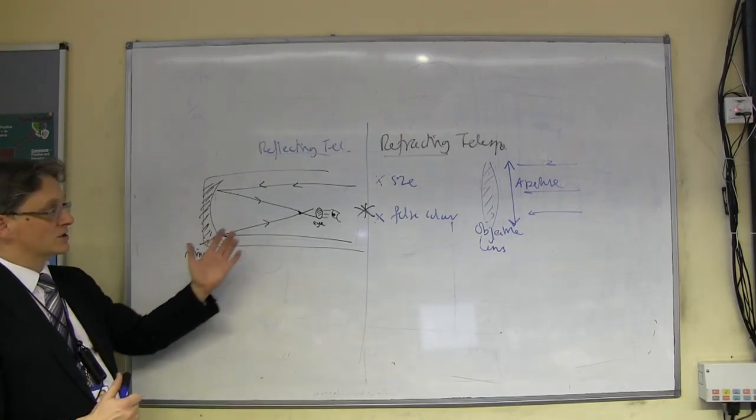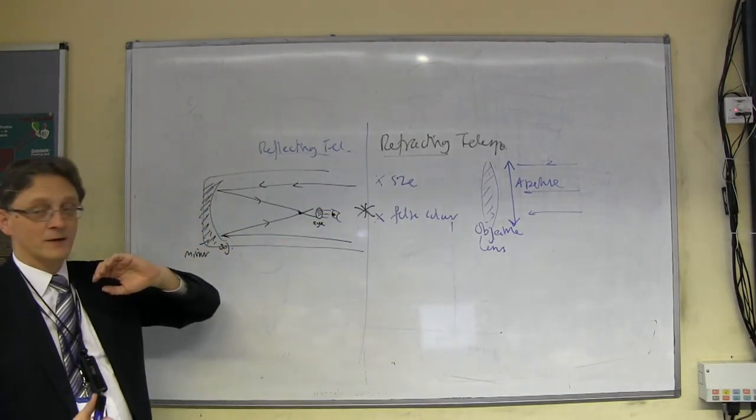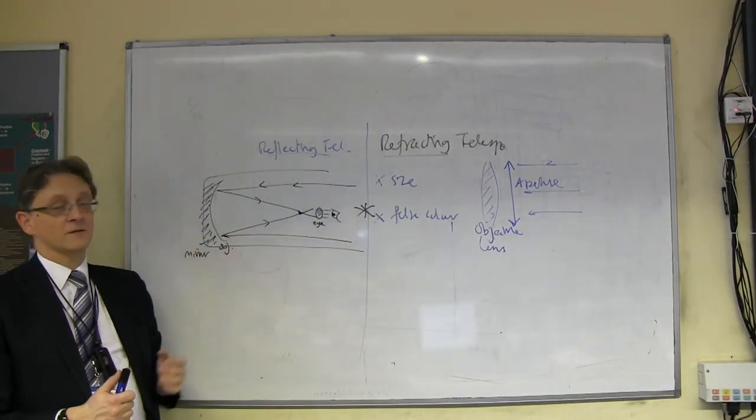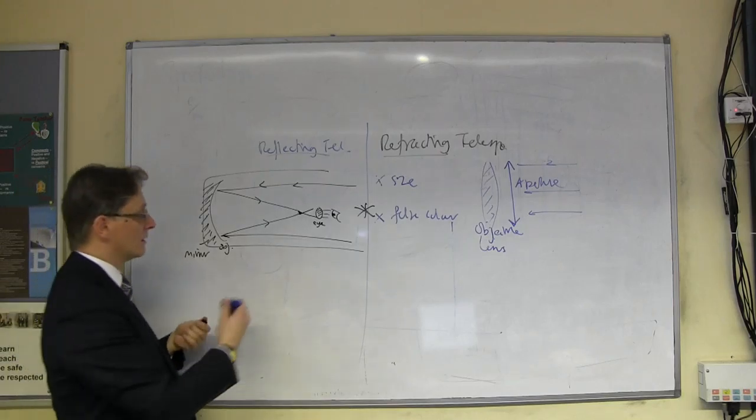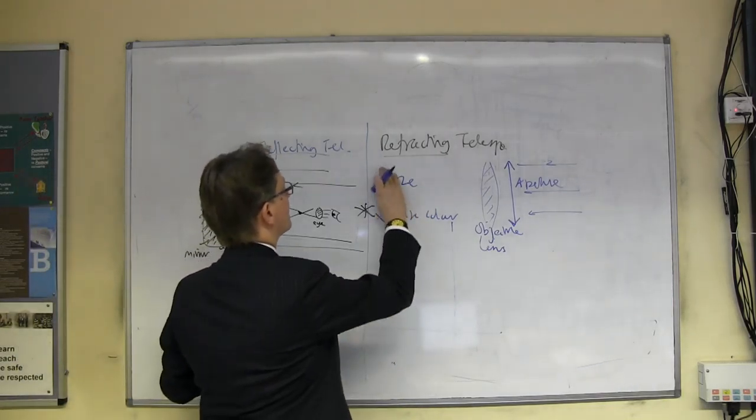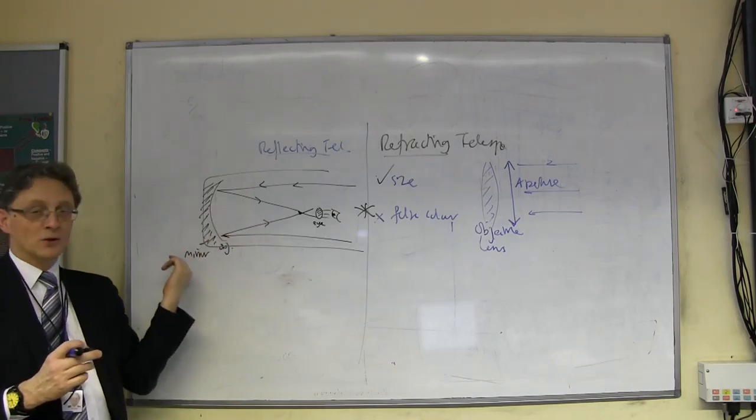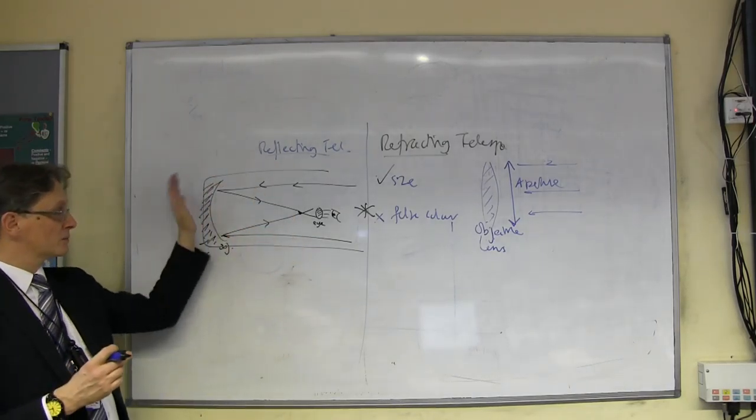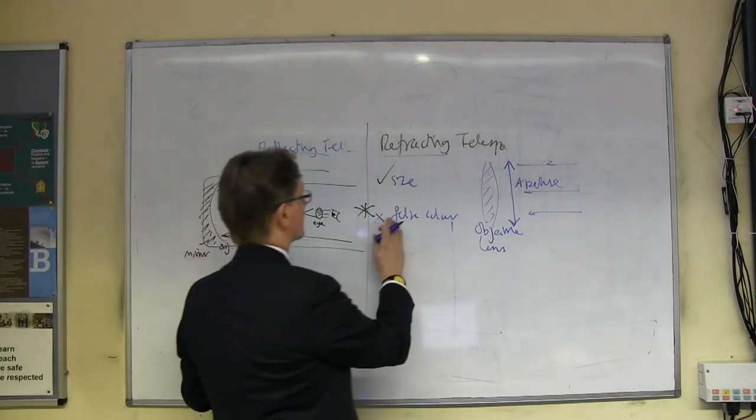So, once telescopes got to a certain size, as we talked about last week, people changed over to using reflecting telescopes. The big problem that you've sorted out is the size problem. You're trying to make a big mirror, not a big lens. That can go at the bottom of the tube, not the top, and, of course, being a mirror, you can support it from behind, so you've solved the size problem, largely.